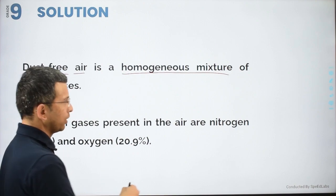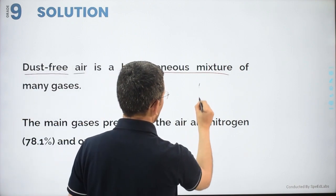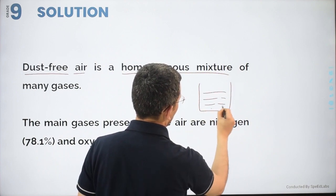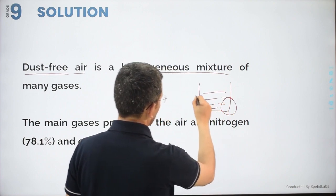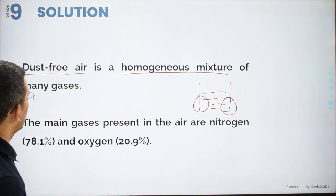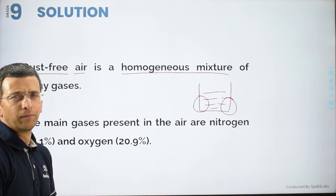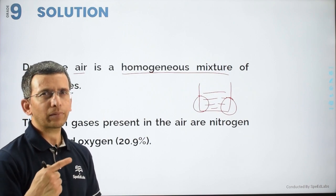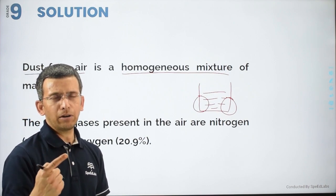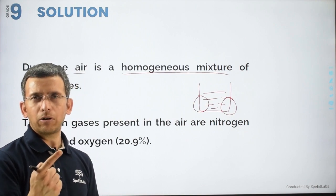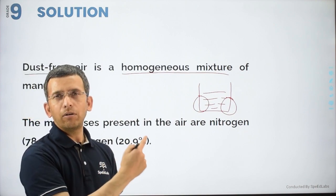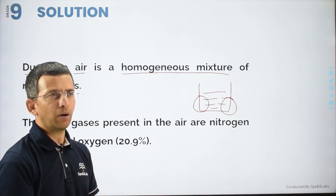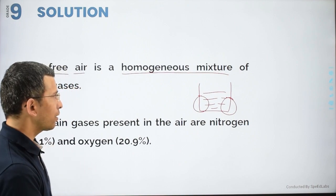Now, from whichever portion of the solution you take a sample, you will find two interesting observations: you will find the same kind of sweetness, and you will find the same kind of molecules. This means that sugar and water are available everywhere uniformly, with the same number of molecules of water and sugar throughout.